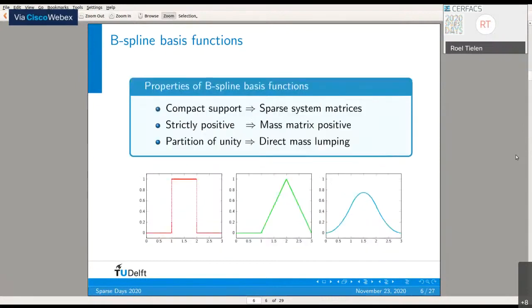In general, B-spline basis functions have some interesting properties. First, they have a compact support, even though it increases with the approximation order. But in any case, we obtain sparse system matrices. Furthermore, they are strictly positive, which implies that the mass matrix consists of elements which are all larger or equal to zero.